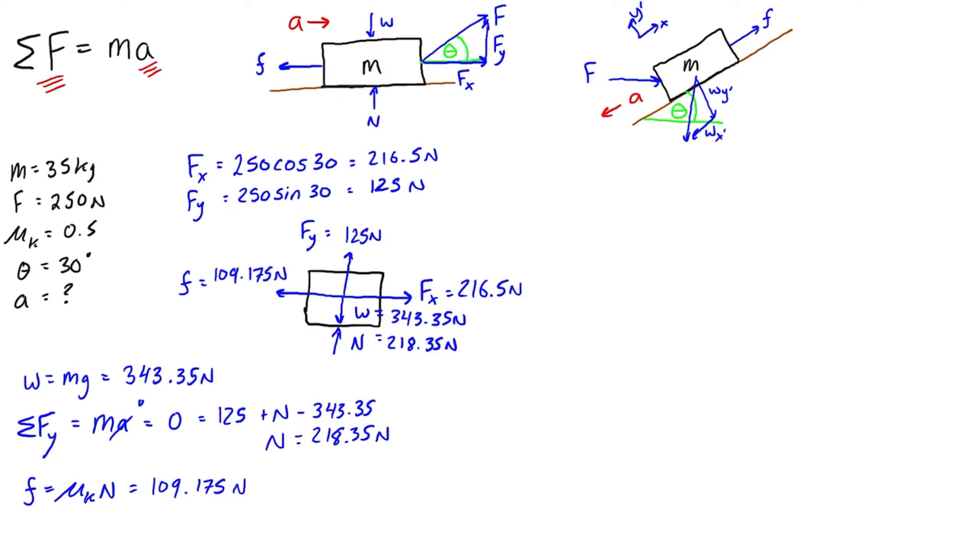So what we can do is we can write the sum of forces is equal to mass times acceleration. This is referring to the sum of the positive direction that we're referring to. In this case, it's matching the direction of acceleration. So fx is in the same direction, so we're going to have that as a positive value.